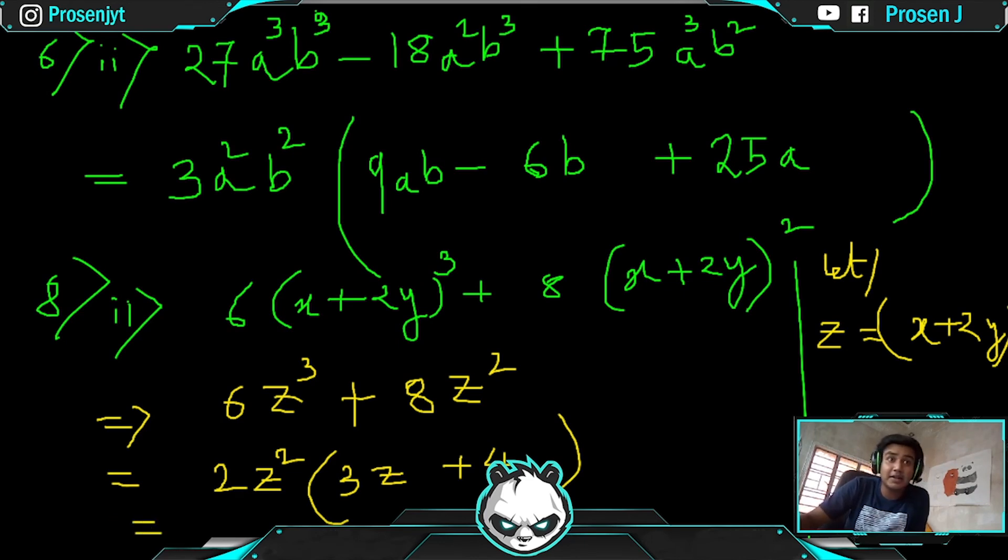You need to write the value of z here. So 2z² times, in place of z write (x+2y) as it was given, because z was not the given factor. Put the value and then 3z, so write 3 and put the value of z which is (x+2y). That's it, no more work.